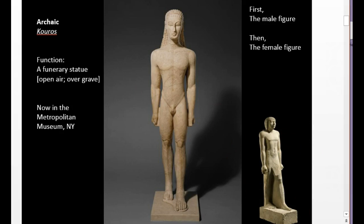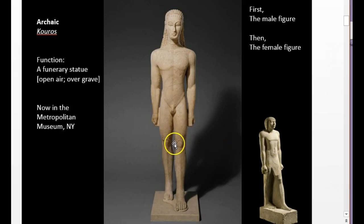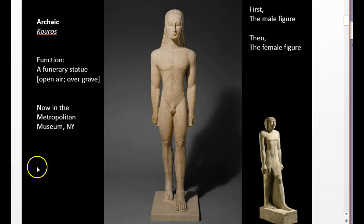They look alike in terms of the development of the human body and definitely in the pose. But there is less of the Egyptian attachment to the block — here the arms are freed as well. The Greeks free the figure from the block, and they also tend to take the clothes off — these are nude statues. This one is particularly interesting because facially it is a little more abstract than what you are used to in Egyptian art.